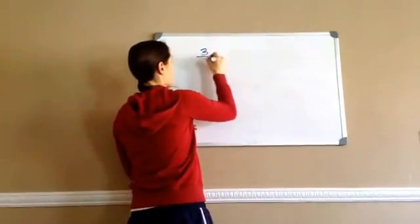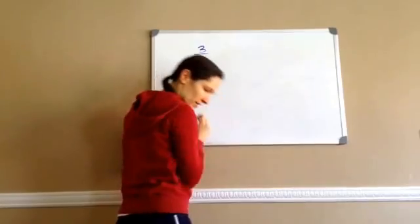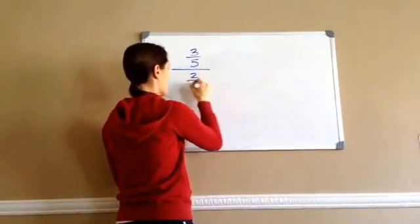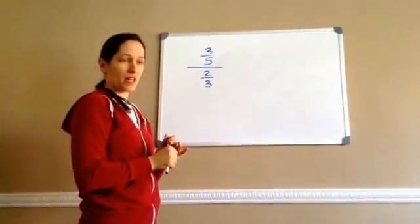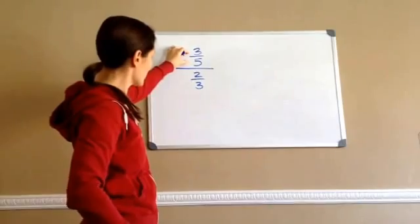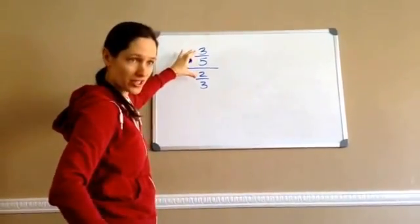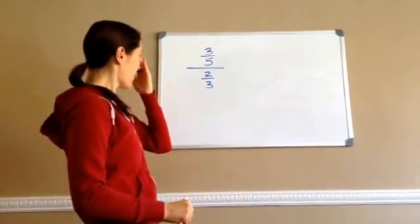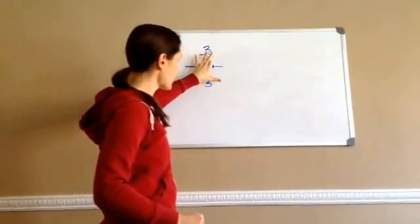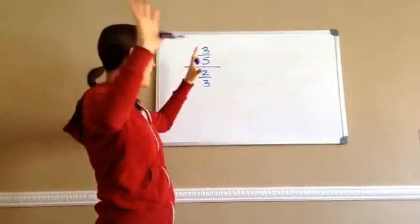this is what a complex fraction looks like. For example, 3 fifths divided by 2 thirds. And the reason why this is a complex fraction is because we have a fraction and a fraction over a fraction. Isn't that weird? So when you see something like this, your brain goes, what?